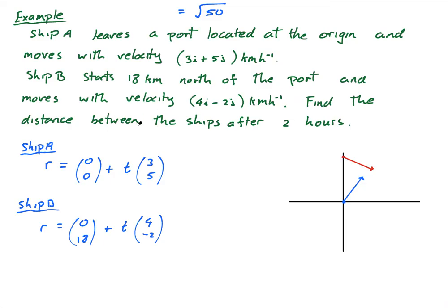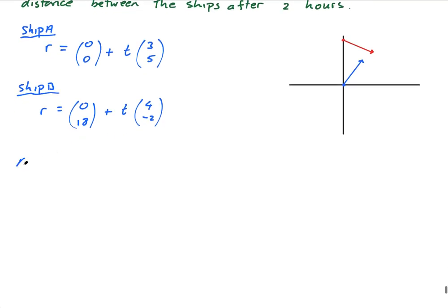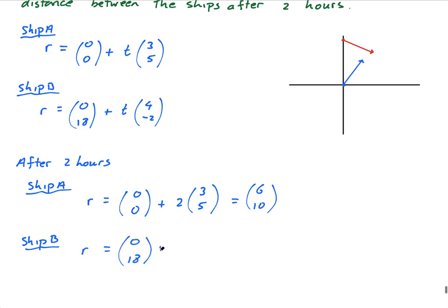So the question says, find the distance between the ships after 2 hours. So after 2 hours, Ship A, what is Ship A's position vector? Well, Ship A's position vector is (0,0) plus 2 times, because it's now 2 hours, so t is 2, 2 times (3,5), which is just (6,10), so his position vector is (6,10). And Ship B's position vector is going to be (0,18) plus 2 times (4,-2), which gives us (8) and then 18 minus 4 is 14, so (8,14). That's his position vector.